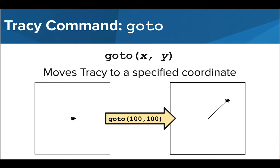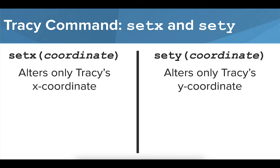The go to command works exactly the same as the set position command, so feel free to use whichever command you feel more comfortable with to send Tracy directly to a coordinate point. In the same way we can use the set position or go to commands to send Tracy to a specific x, y coordinate, we can use the set x or set y command to change only the x or y coordinate of Tracy's location.